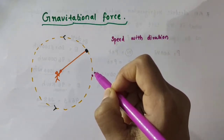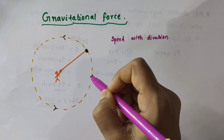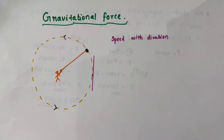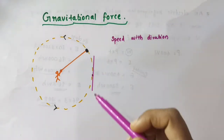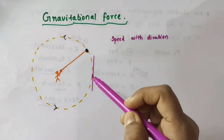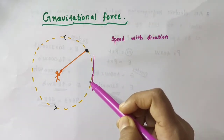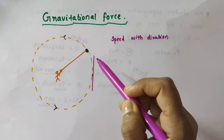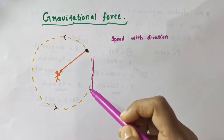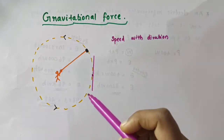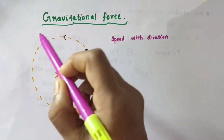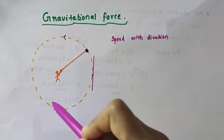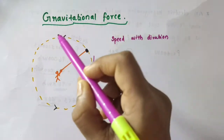That is, we just want to draw a tangent first. Let this be that tangent — that straight line which passes through only this point. This is the tangent drawn at this particular point. Now, the stone is moving in the anti-clockwise direction.